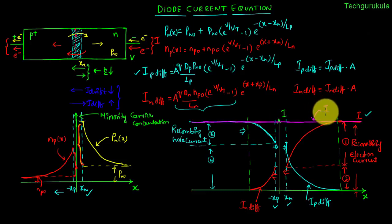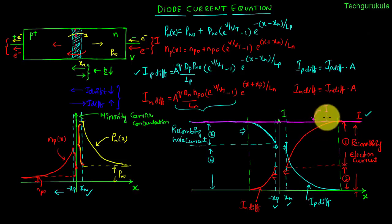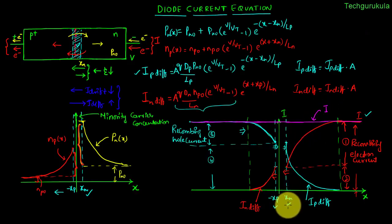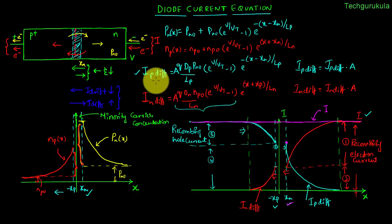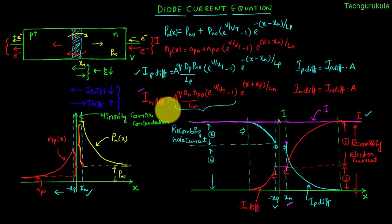Let's say this is the current flowing because of the applied potential. Now let us find what this current I is. At any point, if we add the two components we would get the total current I. I am picking x = x_n as the point, where the current because of holes is the diffusion current I_p,diff at x = x_n, plus the drift current of electrons at x = x_n. We know that the current throughout the depletion region wouldn't change, so the current at x_n equals the diffusion current of electrons at −x_p, which means we need to find I_n,diff at x = −x_p. Total current I = I_p,diff at x_n plus I_n,diff at −x_p.